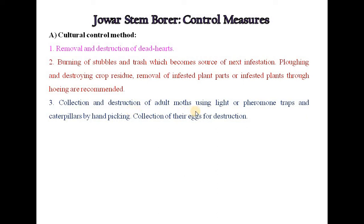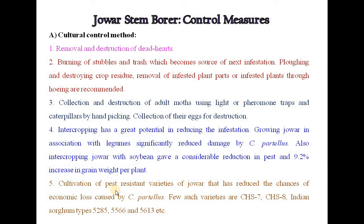Collection and destruction of adult moths using light or pheromone traps, and caterpillars by hand picking. Collection of eggs for destruction. Intercropping has great potential in reducing infestation. Growing jawar in association with legumes significantly reduces damage by Chilo partellus. Intercropping jawar with soybean gives a considerable reduction in pests and 9.2% increase in grain weight per plant.